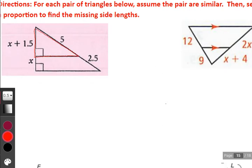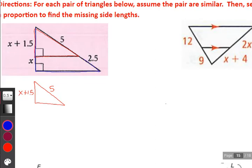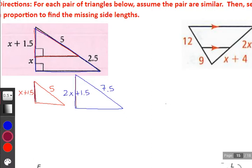Okay, small triangle. We have x plus 1.5 on the left, we have 5 for the hypotenuse. Larger triangle, we have 5 plus 2.5 for the side, that'd be 7.5. Across the left-hand side, we have 2x plus 1.5.